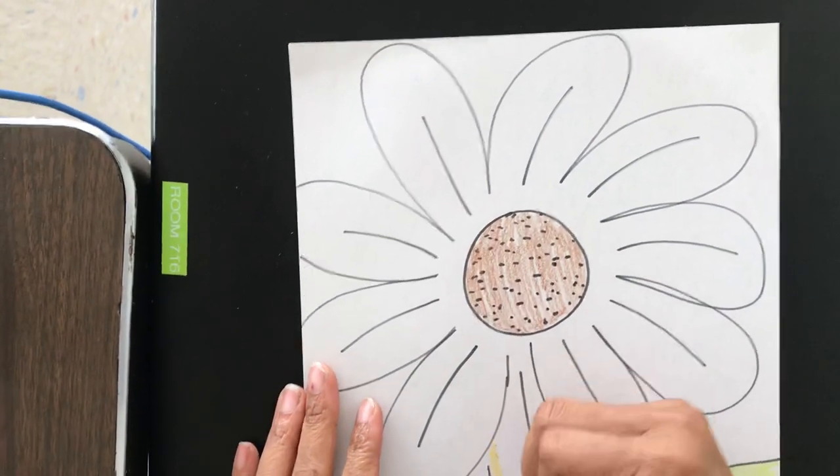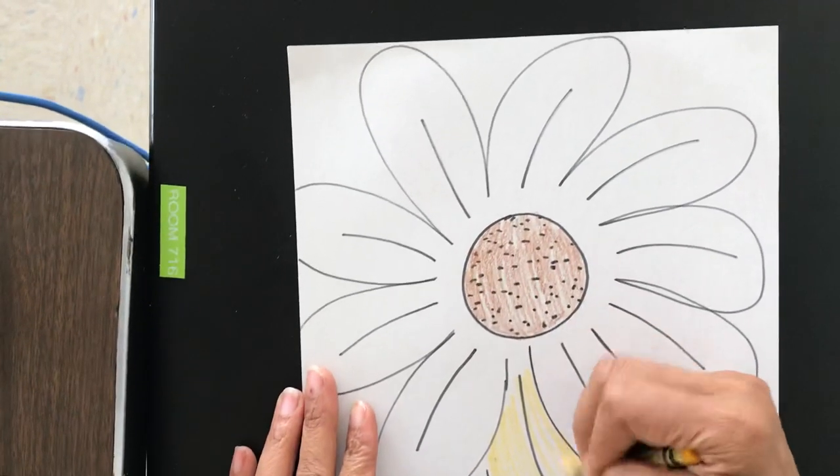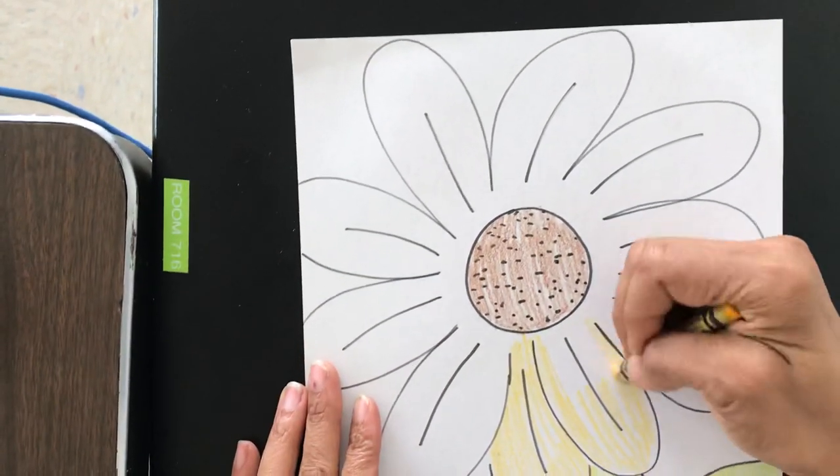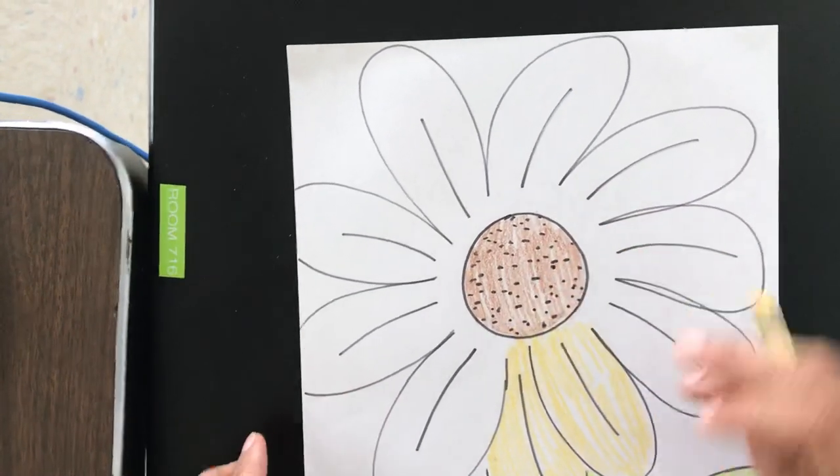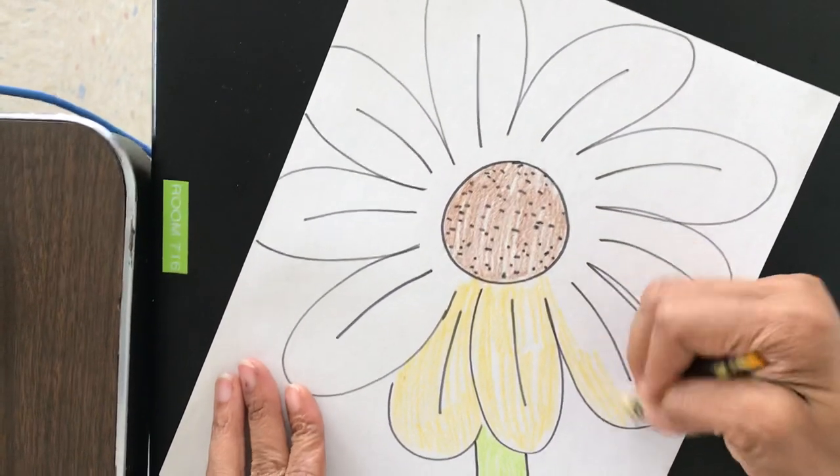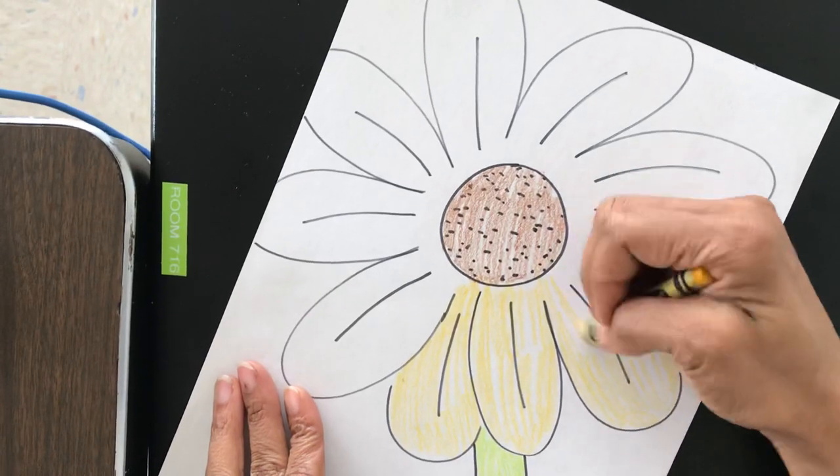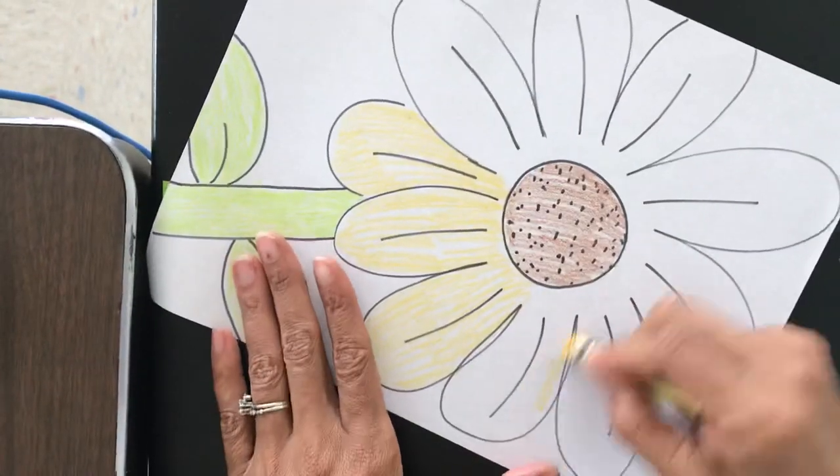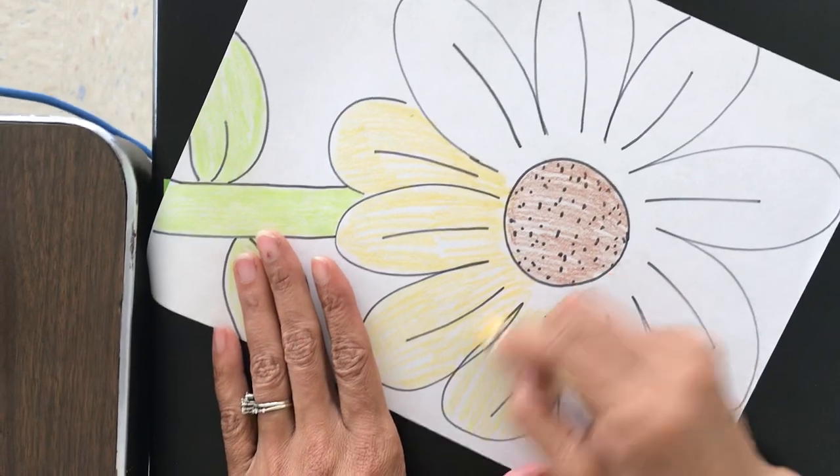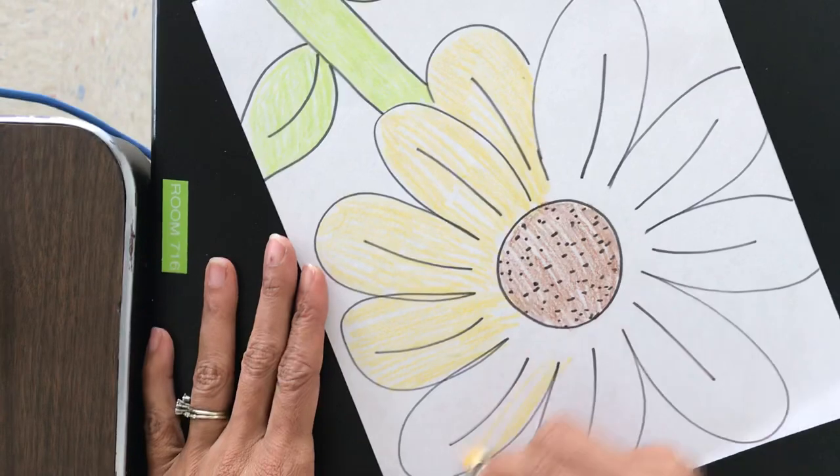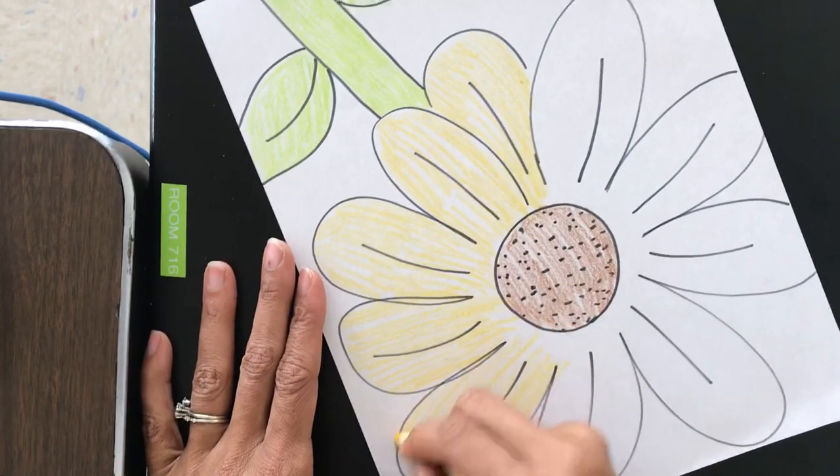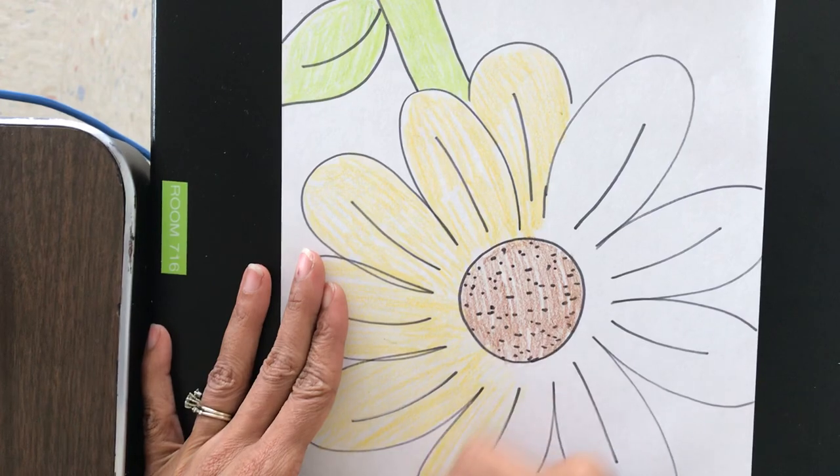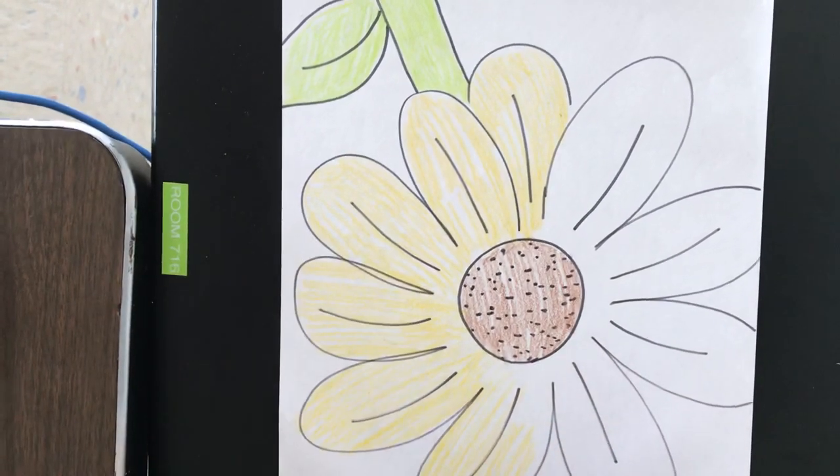Next, I'm going to go in with a golden yellow. This is going to come out so cool, everybody. And if you need to turn your paper to color, that is fine, everybody.